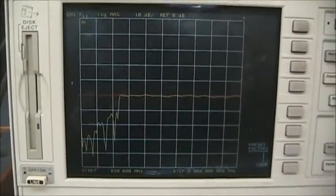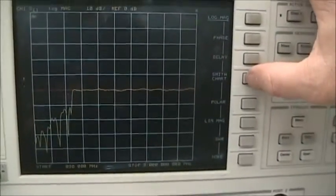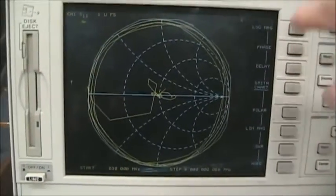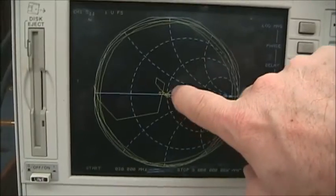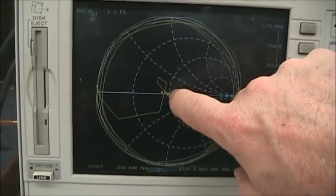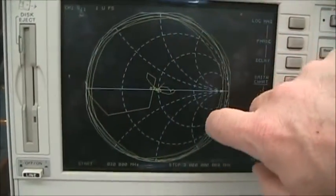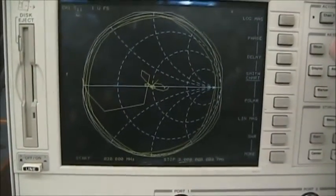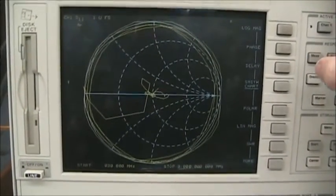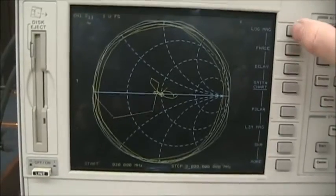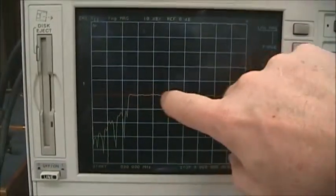If we look on the Smith chart, we can see that we start out in the center, a pretty good match, but we end up on the outside of the chart, an open or short or pure L or pure C mismatch, which was this region over here.